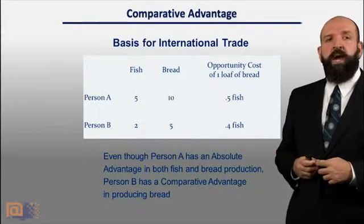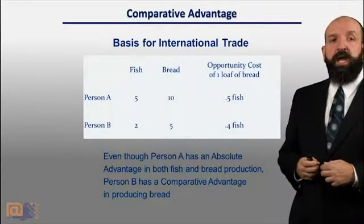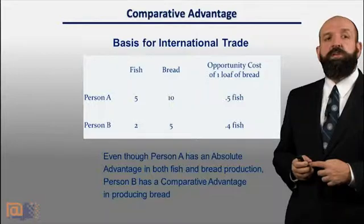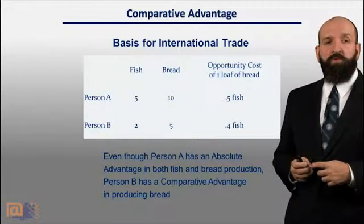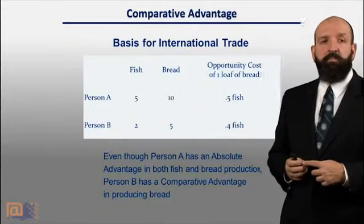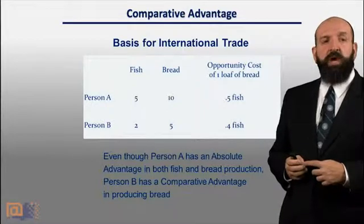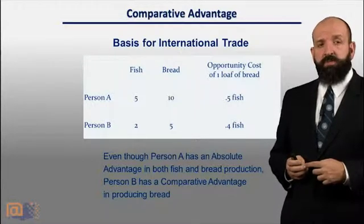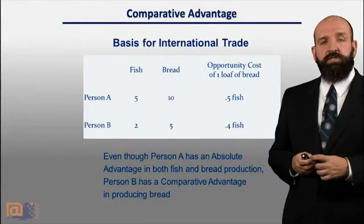If you look at the math, the opportunity cost of one loaf of bread for person A is 0.5 fish. For person B, however, the opportunity cost of one loaf of bread is 0.4 fish. So in terms of fish, bread production is relatively cheaper for person B. Both of them could be made better off if person B specializes in bread production, person A specializes in fish production, and then they trade with each other. Check the math — it actually works out.